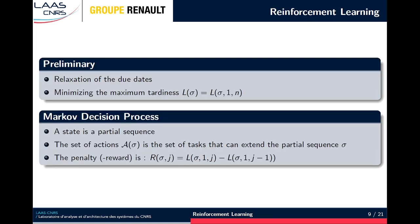How to learn a heuristic? First, we need to change our problem a little bit. We relaxed the due date to transfer the problem into an optimization problem. The objective is then to minimize the maximum tardiness, and if it is equal to zero, then we have a solution of the initial problem. We note L of sigma the maximum tardiness of the sequence sigma. Now, we can see our problem of building a sequence of tasks as a Markov decision process in which a state corresponds to a partial sequence. The set of actions for a state is a set of tasks that can extend the partial sequence without breaking any precedences nor capacity constraints. Finally, we can define the penalty of taking an action as a marginal increase of the maximum tardiness. Now, we can apply standard reinforcement learning as we seek for a policy that minimizes the sum of the penalties in this MDP.